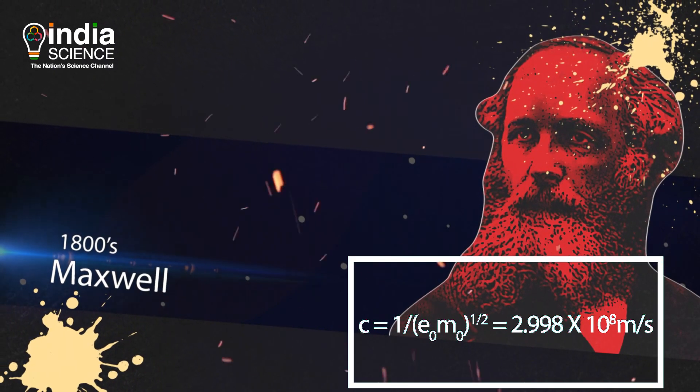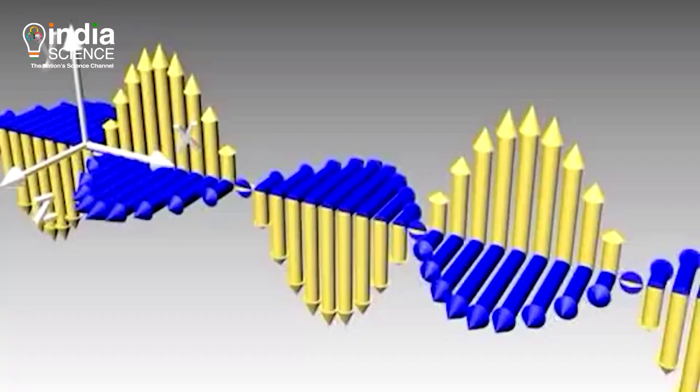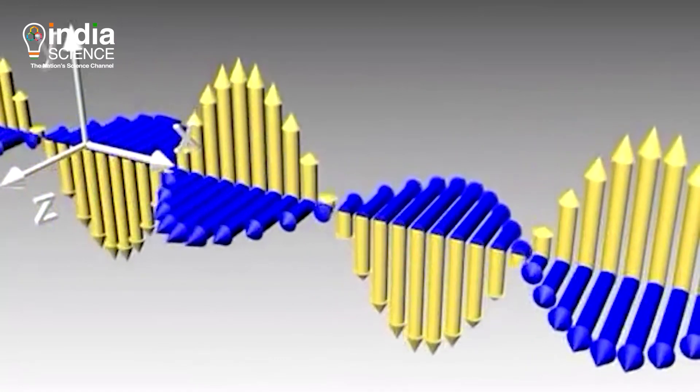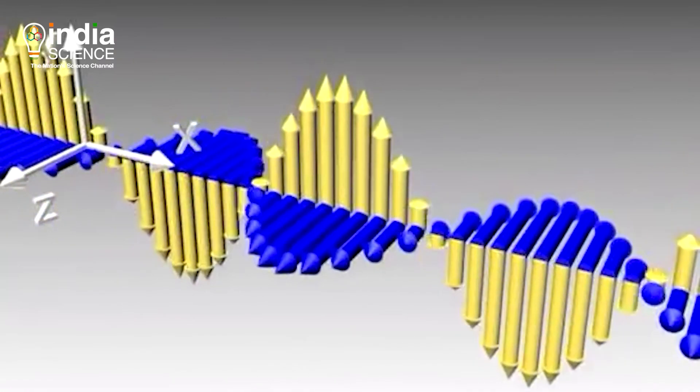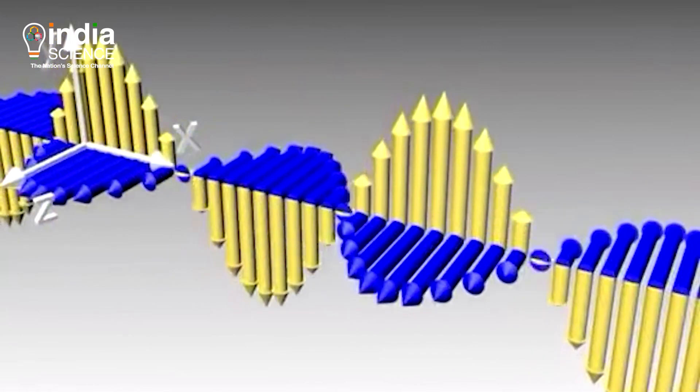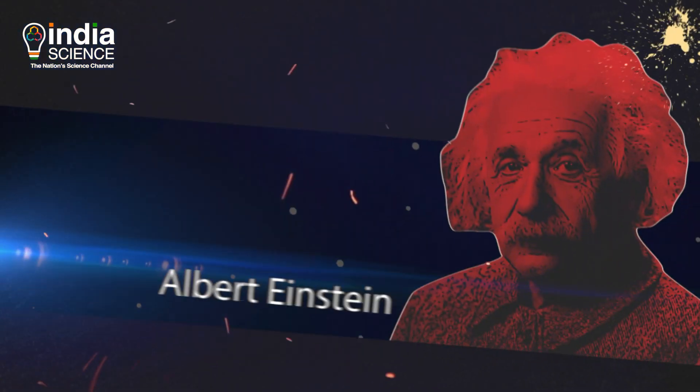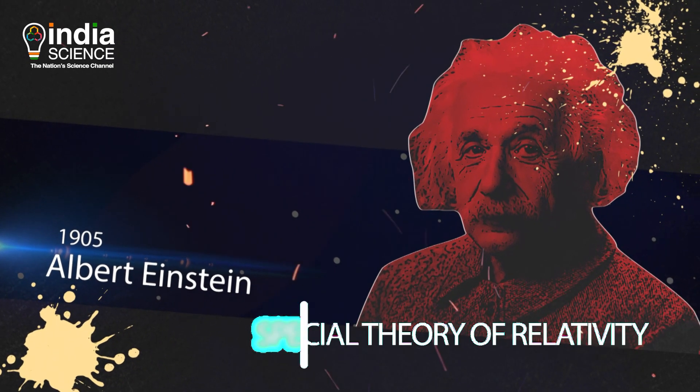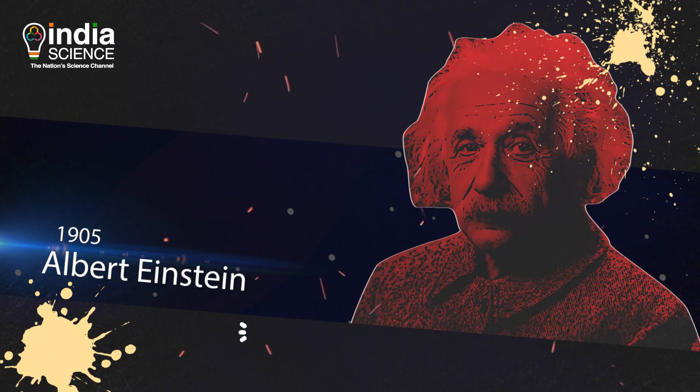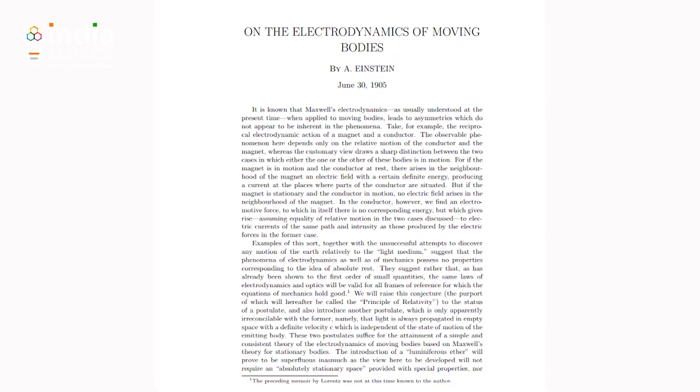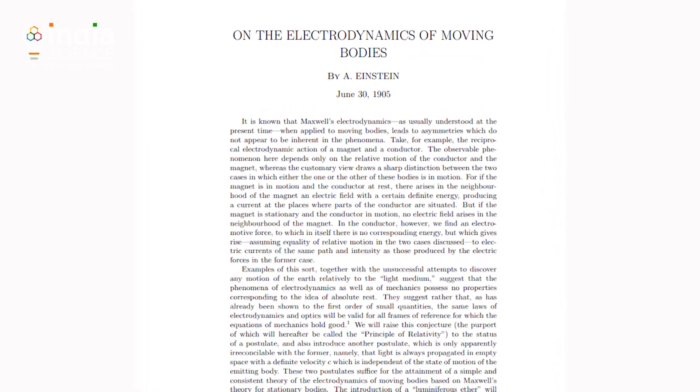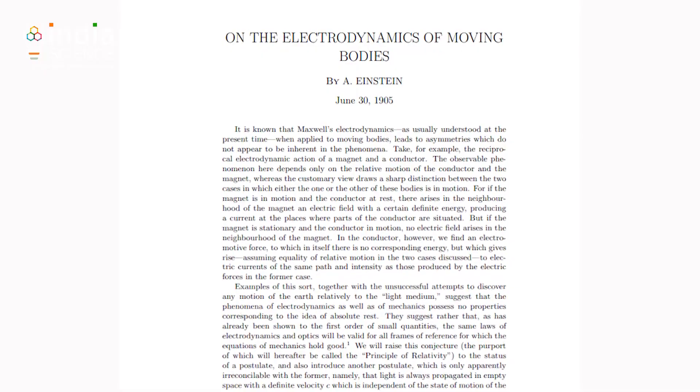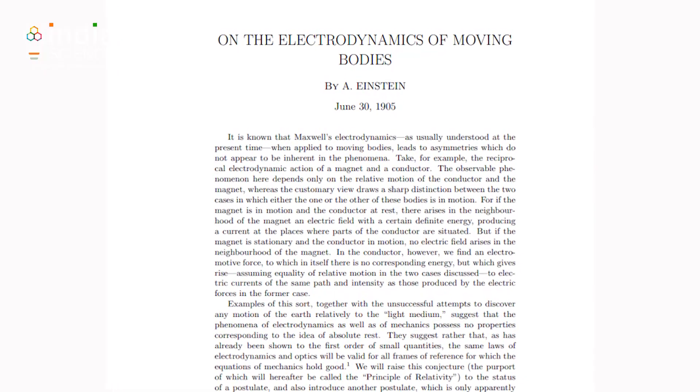Maxwell also said that light is electromagnetic radiation, and Einstein took this from him. But everything changed after 1905. Einstein published a paper on special theory of relativity, which changed our understanding of physics. In this theory, Einstein predicted that nothing can travel faster than the speed of light.